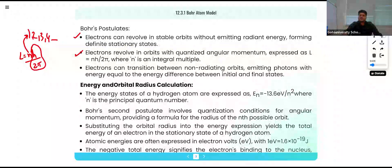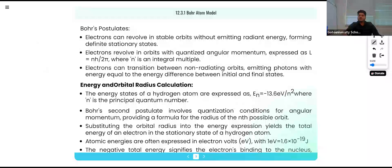Let's study the Bohr postulates again. According to Bohr, electrons can revolve around the nucleus in stationary orbits. Second, the angular momentum of revolving electrons is L equals n h upon 2π. Third, electrons can transition between non-radiating orbits, meaning electrons can jump from high stationary orbits to low stationary orbits.